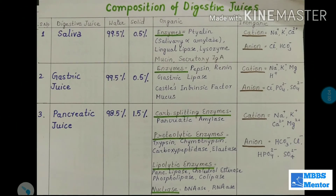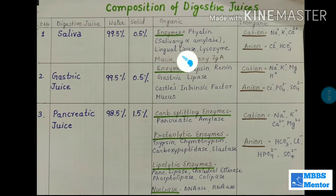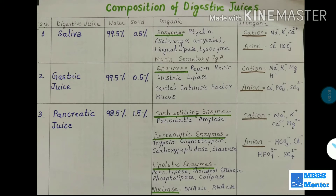Welcome back to another video on MBBS Mentor. This is another video in the series on the digestive system. Today our topic is the composition of digestive juices. We will discuss the digestive juices, their constituents — organic and inorganic — their enzymes, and the cations and anions present in them in detail. Digestive juices are secreted by various glands and organs in our body.